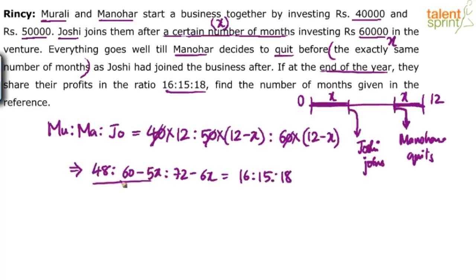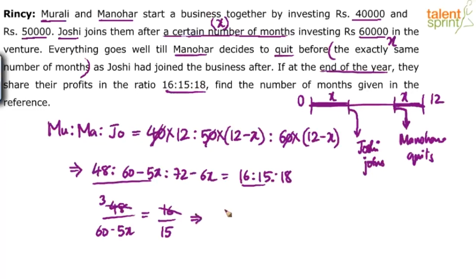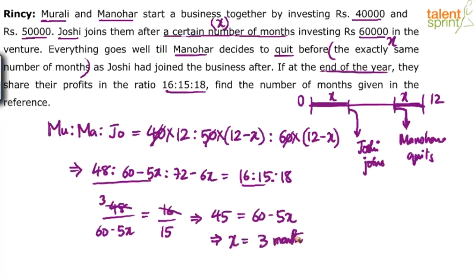Now simplify for X. Taking the first two parts: 48 / (60 − 5X) = 16 / 15. Cross-multiplying: 15 × 48 = 16 × (60 − 5X), giving 45 = 60 − 5X, so 5X = 15, and X = 3. The number of months given in the reference is 3 months.